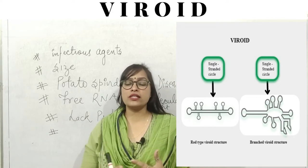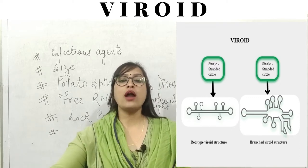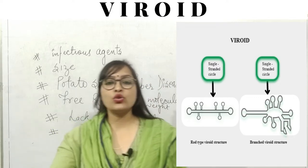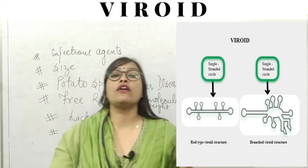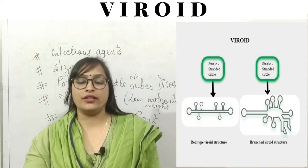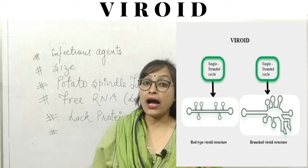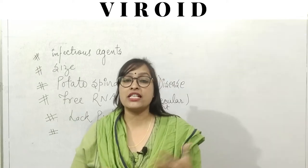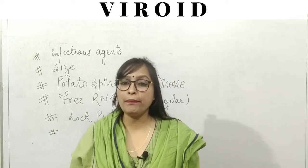Viroids consist only of a short strand of circular RNA capable of self-replication. This RNA is capable of self-replication - they can replicate.